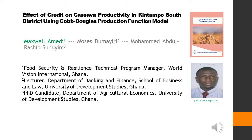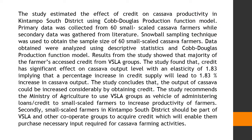Effect of Credit on Cassava Productivity in Kintampo South District Using Cobb-Douglas Production Function Model. This article is written by three authors: First author Maxwell A. Mehdi, second author Moses Dumeiri, third author Muhammad Abdul-Rashid Sawini. The study estimated the effect of credit on cassava productivity in Kintampo South District using the Cobb-Douglas Production Function Model.